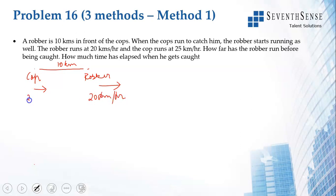The first thing to remember is that the person who is starting behind or starting later needs to have a greater speed than the person ahead. If the cop's speed were lower than 20 km/h, he could never catch the robber. Here the cop's speed of 25 km/h is greater than the robber's 20 km/h, so catching is possible.